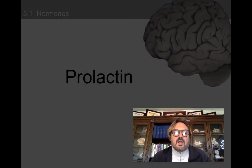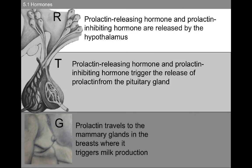We're going to talk about prolactin. Prolactin-releasing hormone and prolactin-inhibiting hormone are released by the hypothalamus. They trigger the release of prolactin from the pituitary gland, and prolactin travels to the mammary glands and the breasts where it triggers milk production.